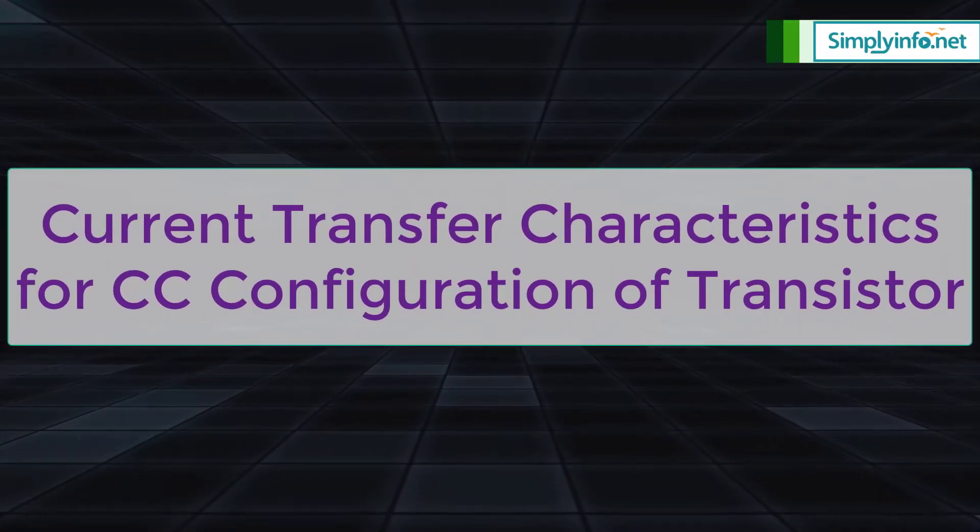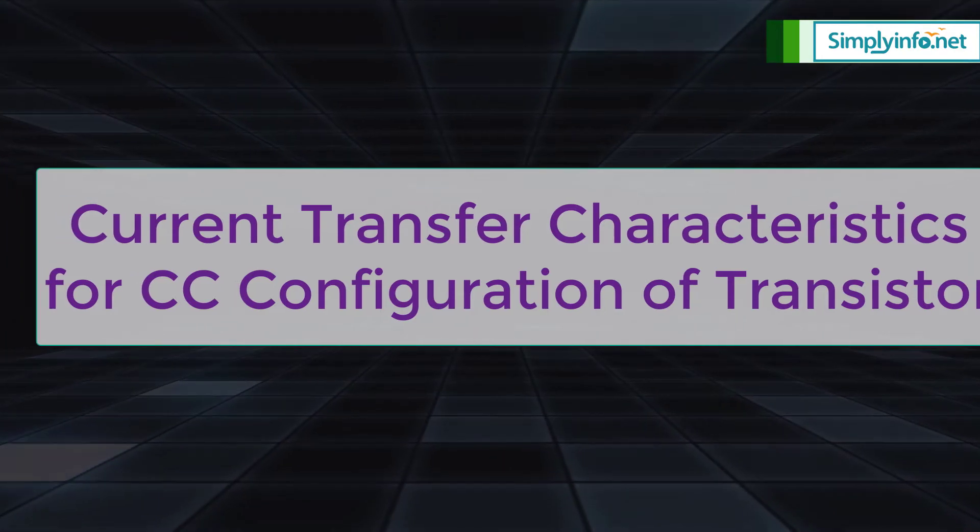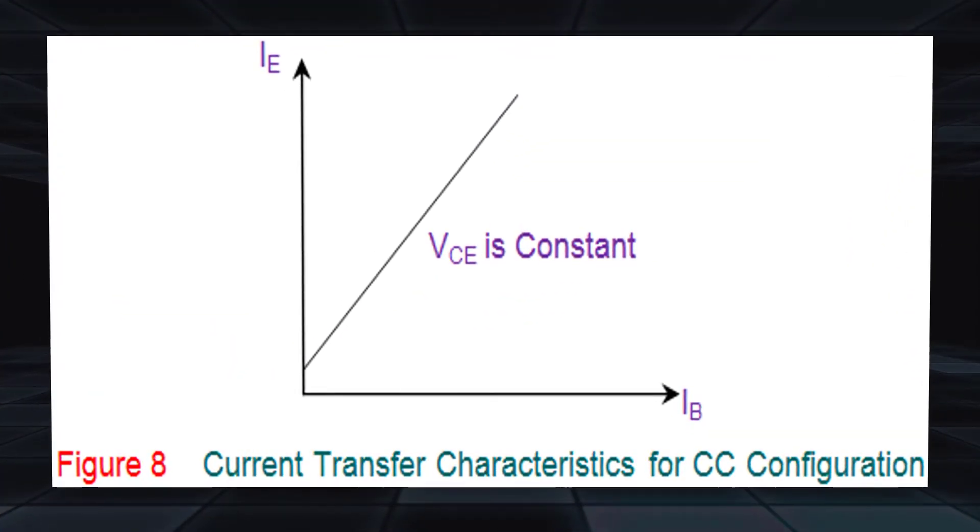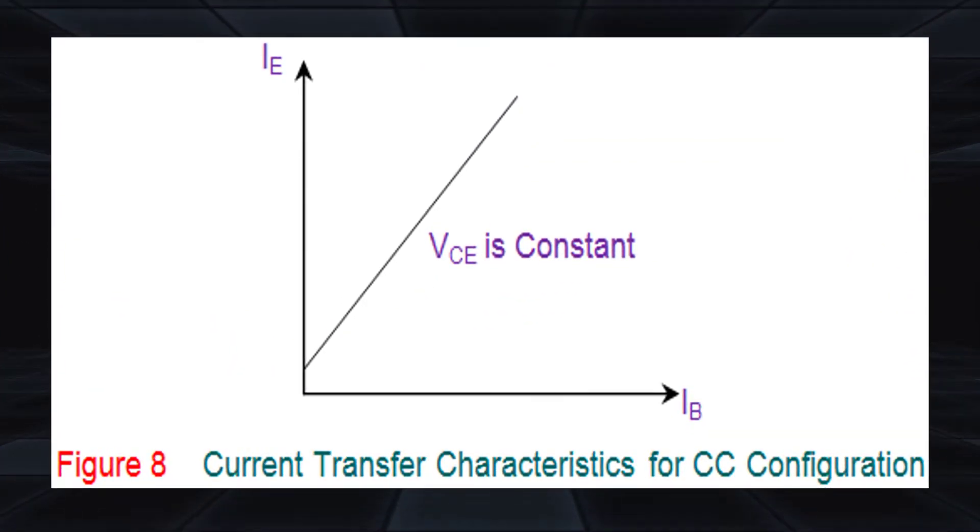Current transfer characteristics for CC configuration of transistor. This characteristic of CC configuration shows the variation of IE with IB keeping VCE as a constant.